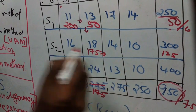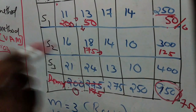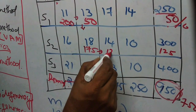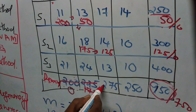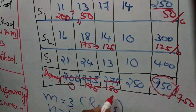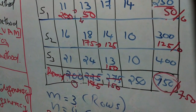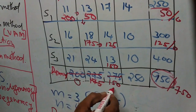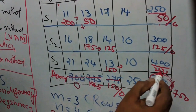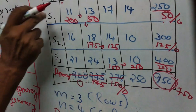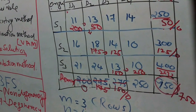Moving to the right to the next cell: demand is 275 and supply is 125. The maximum allocation is 125. The supply is reduced to zero and the remaining demand is 150. Then moving downward, allocate maximum possible, which is 150. This is reduced to zero and the balance is 250. The total allocation is 250, satisfying all demand. This method is known as the north-west corner rule.